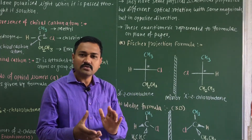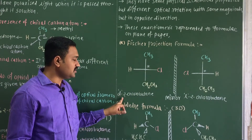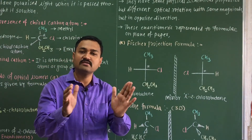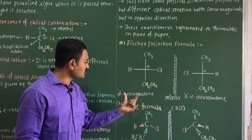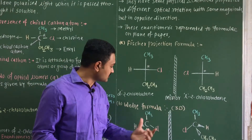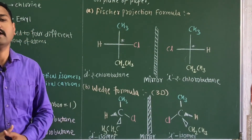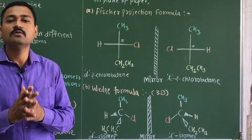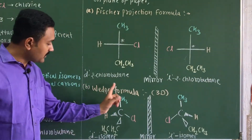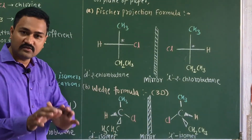One isomer is called D-2-chlorobutane and the other is called L-2-chlorobutane, as their optical rotations are in exactly opposite directions. D represents the dextro form while L represents the levo form. The second representation is the wedge formula, which represents these molecules on a plane of paper in a three-dimensional manner.